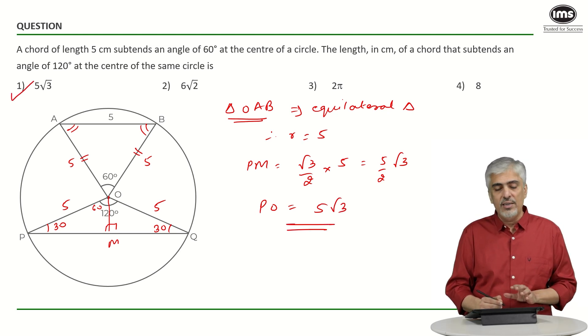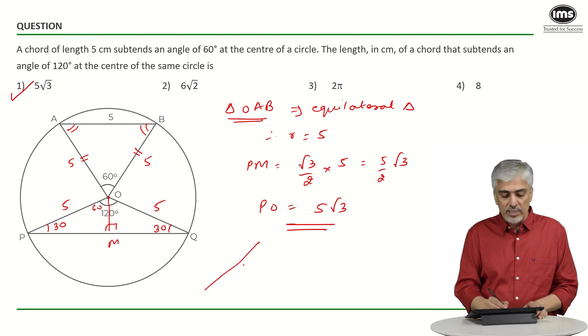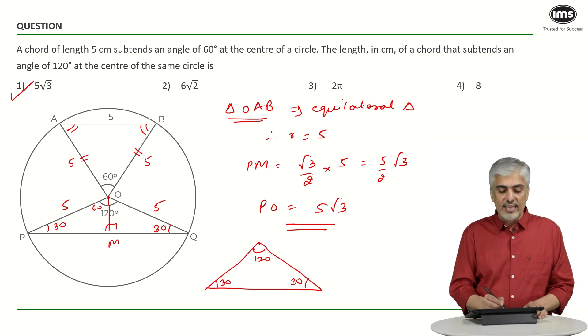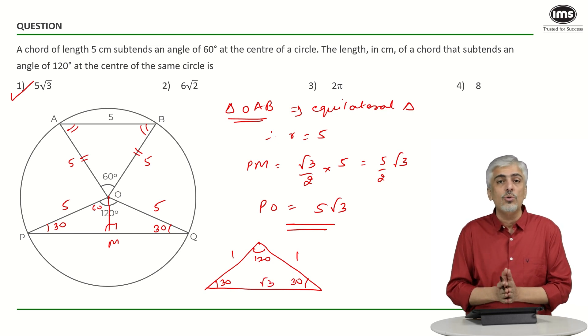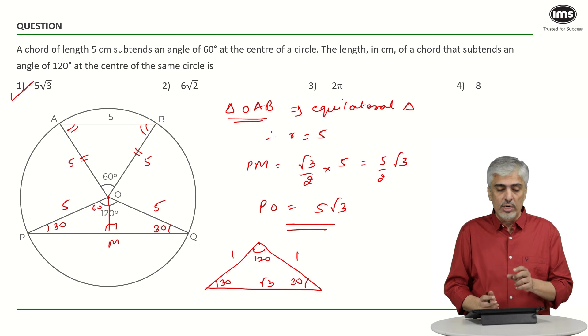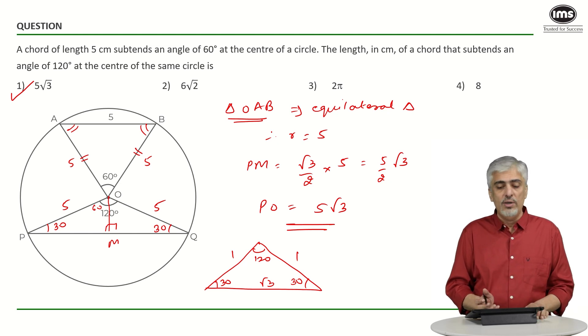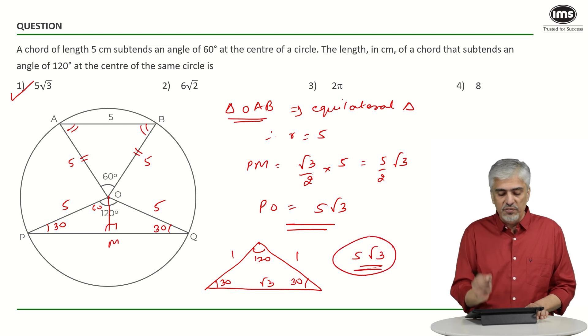But very frankly, if you reach this step or this far into a question, you should be knowing this property that if one angle is 120 and the other two angles are 30, 30 and this is very commonly used, the sides will always be in the ratio 1, 1 and root 3. Sides will always be in the ratio 1, 1 and root 3. You should be knowing this. So there is not even that extra 10, 15 seconds you are wasting. 1, 1 root 3. So the side becomes, the third side becomes 5 root 3 first option.